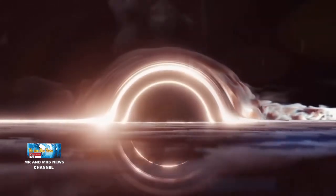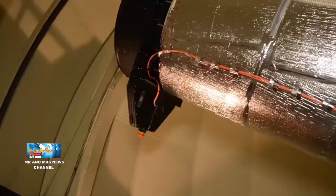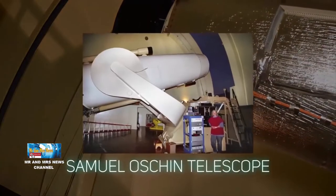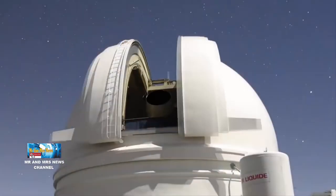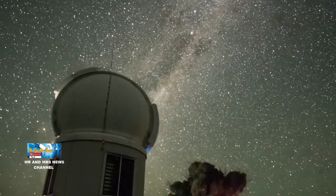Pertanyaannya sekarang, bagaimana para astronom bisa menemukan lubang hitam? Bukankah tidak ada cahaya yang bisa lolos dari tarikan gravitasi lubang hitam sehingga lubang hitam tidak bisa dilihat?